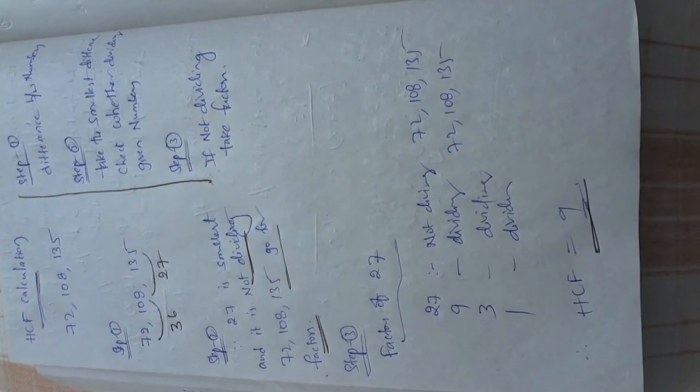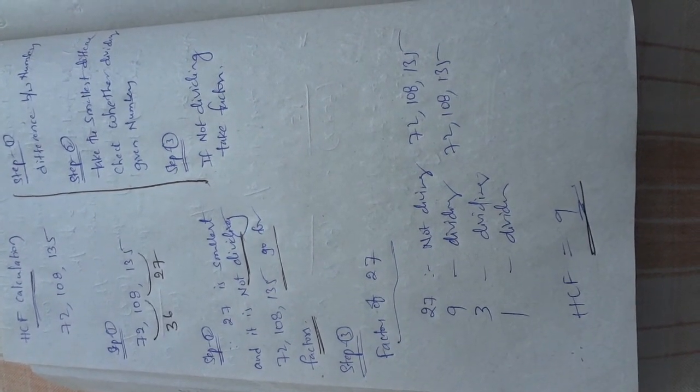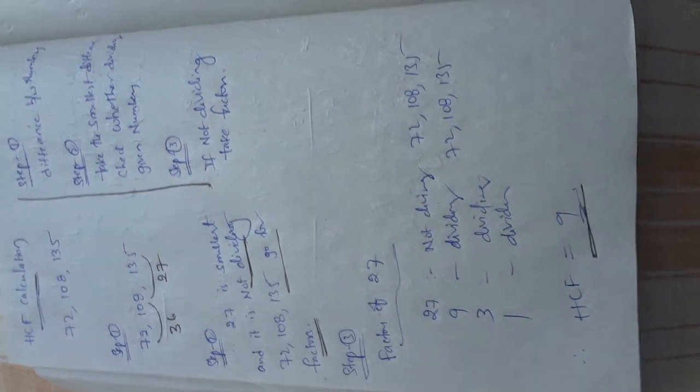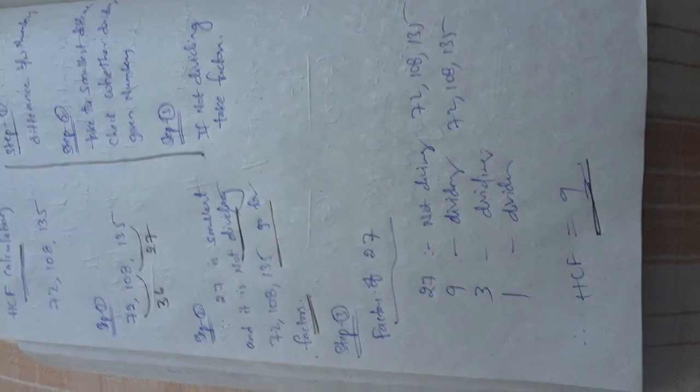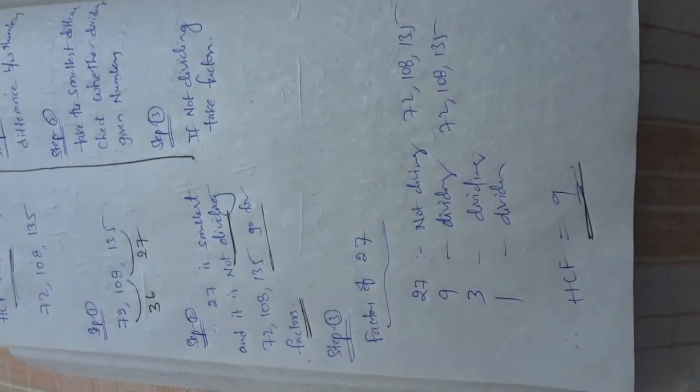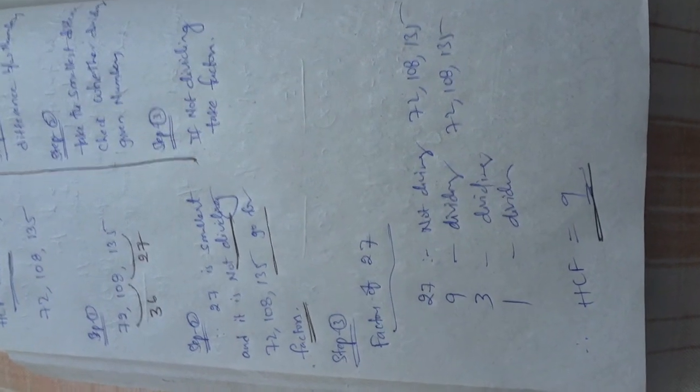Take the difference and take the smallest difference. Check whether the smallest number is dividing all the given numbers. If that number is not dividing, take the factors of the smallest number, and thus you get the answer.